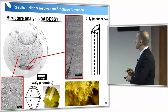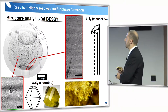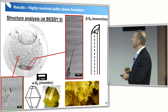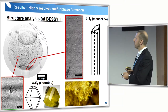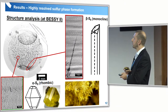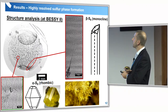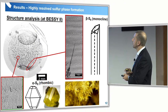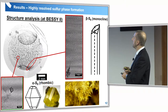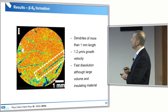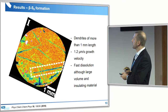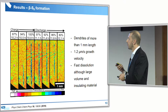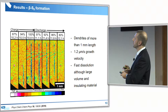We can also perform these measurements with much higher resolution at the synchrotron radiation source at BESSY II. Here you can directly see the formation of two different sulfur phases: the alpha phase, which is the rhombic phase, and also a phase that can be correlated to beta-sulfur. Because this is an imaging method, we can follow how fast these dendrites form and how fast they dissolve.